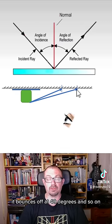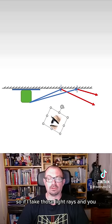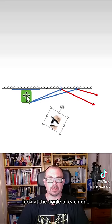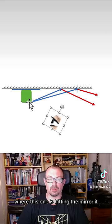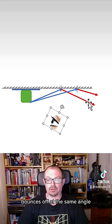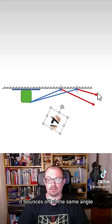Light hits the mirror at 40 degrees, it bounces off at 40 degrees, and so on. If I take those light rays and you look at the angle of each one where this one is hitting the mirror, it bounces off at the same angle. Where this one's hitting the mirror, it bounces off at the same angle.